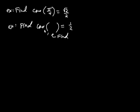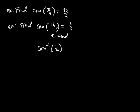We don't typically write 'cosine of blank equals 1 half.' The same problem is usually formulated as inverse cosine — cosine with a little negative 1 — of 1 half. So if you correctly came up with pi over 3 as the angle whose cosine is 1 half, then inverse cosine of 1 half equals pi over 3. When somebody writes this, you're looking for an angle.